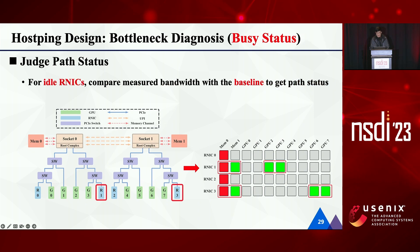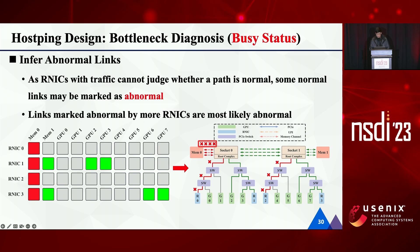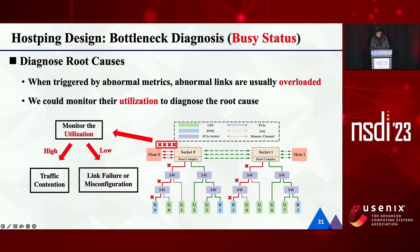Note that if this server has some idle R-NICs, these R-NICs could still get path status by comparing with the baseline. In this way, we get the path status metrics. Based on the status metrics, we could infer abnormal links, the same process as when the host is idle. However, as R-NICs with traffic cannot judge whether a path is normal, some links may be marked as abnormal by mistake. In this case, links marked abnormal by more R-NICs are most likely abnormal. As shown in this figure, memory node zero's channel is the most suspicious. When triggered by abnormal metrics, abnormal links are usually fully loaded. Based on this, we could monitor their utilization to diagnose the root cause. If utilization is very high, traffic contention is the root cause; otherwise, link failures or misconfigurations may be the root cause.